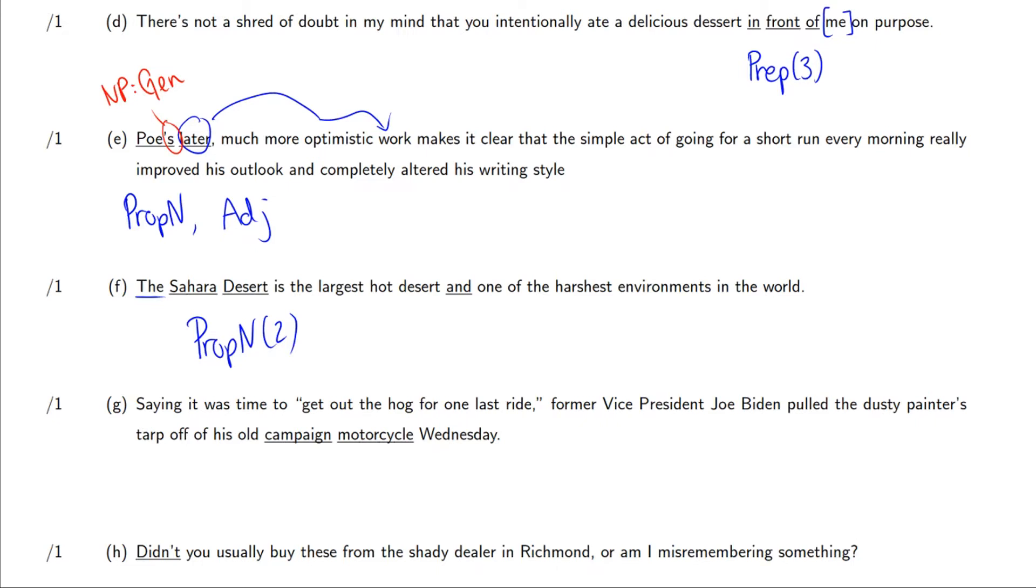Well, if it's a correlative, we would see the word both around here. We'd see the Sahara Desert is both the largest hot desert and one of the harshest environments, but we don't see that word both. So this is just a regular coordinating conjunction. It stands on its own and it's coordinating the phrases, the largest hot deserts and one of the harshest environments in the world, which are both noun phrases.